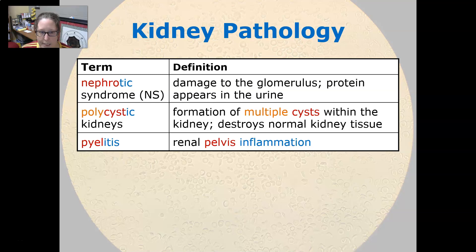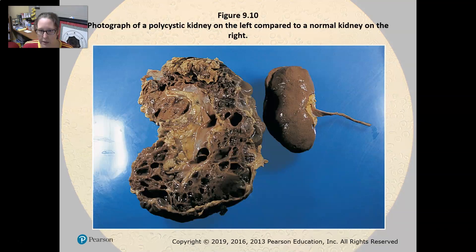Polycystic kidneys are kidneys that have multiple cysts, and the condition destroys normal kidney tissue. Pyelitis is renal pelvis inflammation. This is what a polycystic kidney looks like in comparison to a normal kidney on the right.